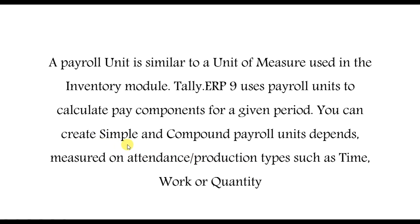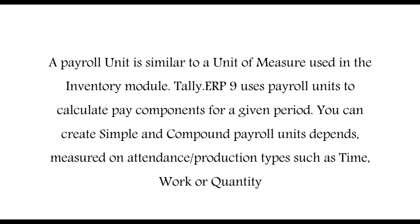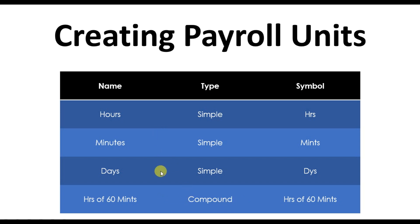We have two types of payroll units to create: simple and compound. Compound payroll units combine two simple payroll units. For example, simple payroll units are used for measuring base salary — we measure in minutes and days. These are the simple payroll units with their symbols. Then we have compound payroll units, such as hours of 60 minutes, which combines two simple payroll units to make one compound payroll unit.